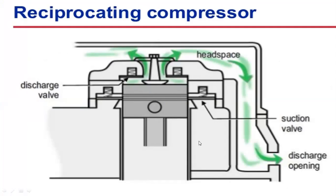Around the circumference, we have the suction valve, and on top we have the discharge valve. As the piston comes down, it sucks the air or fluid inside. And as the piston goes up, it compresses and then sends the fluid out through the discharge opening. This is the typical functioning of a reciprocating compressor — as the piston continuously moves up and down with the speed of the engine, it is sucking the air, compressing it, and discharging it.